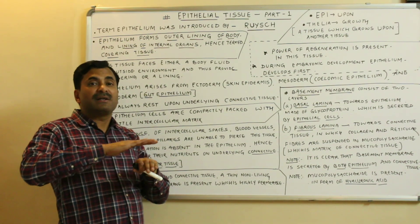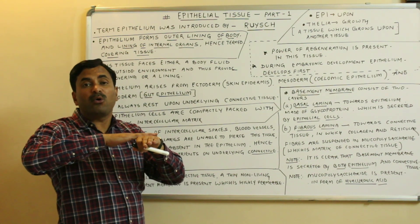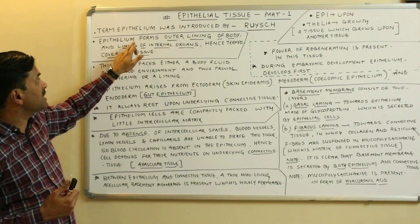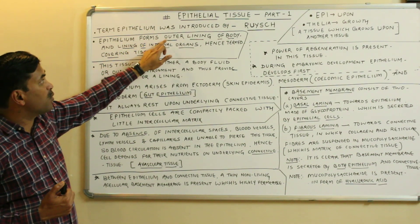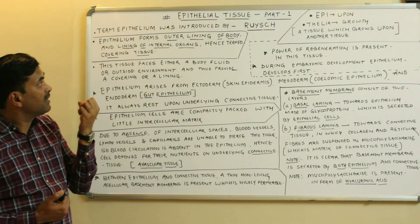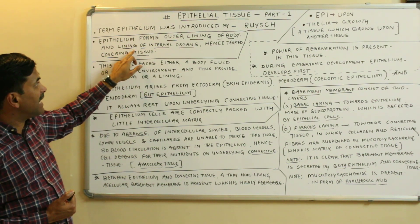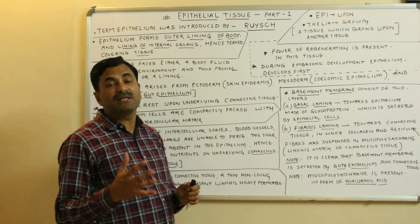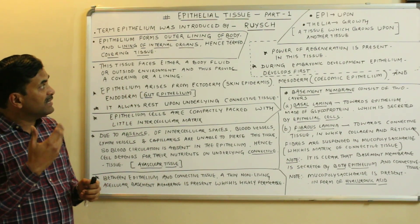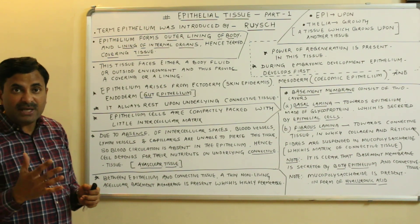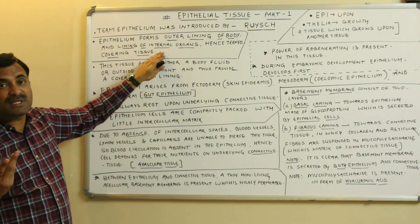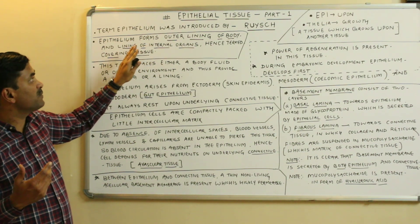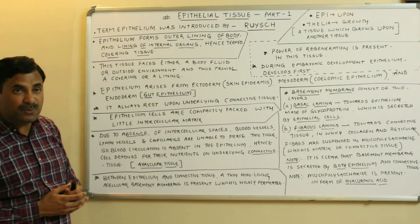Many organs — our skin and others — are covered by a protective lining called the epithelium. Epithelium forms the outer lining of the body and also lines internal organs. Hence it is called a covering tissue, because it covers either the body surface or the internal organs.